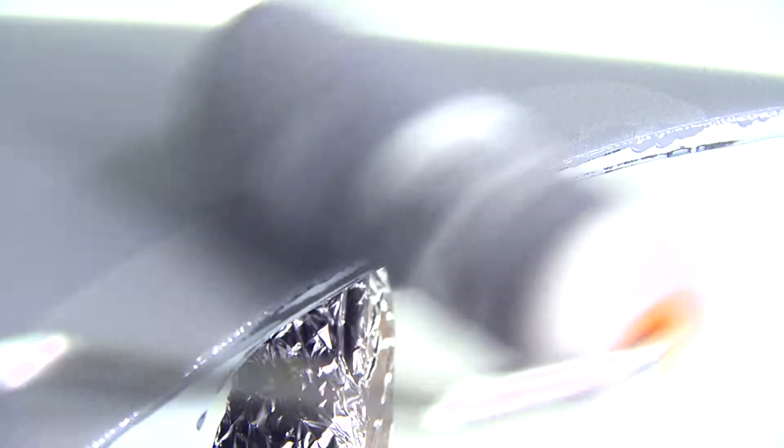This rolling of primer surfacer is dependent upon the shape and contour of the vehicle. It will not work in certain areas such as around a fog light or very intricate design parts of the vehicle where it's hard to maneuver the roller.